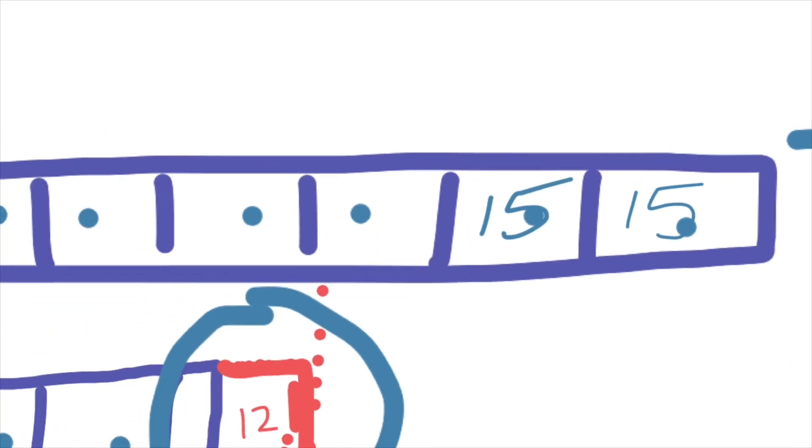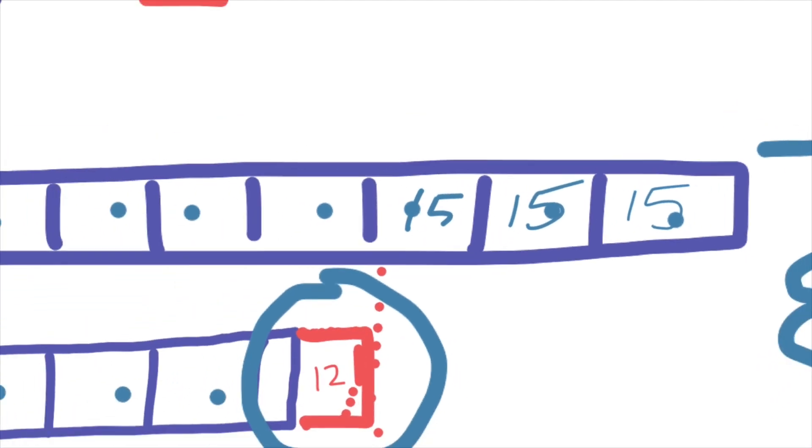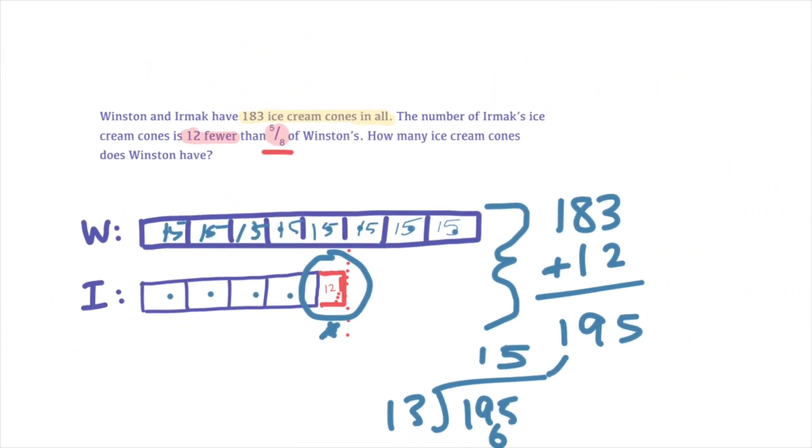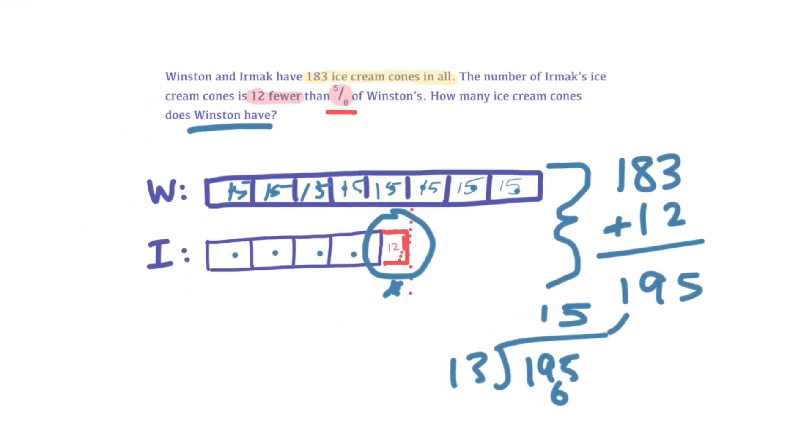This tells me something very important. Now I know every block is 15. There we go. We'll just ignore those dots there. Everything is 15. And I can actually ignore Ermacs because the question is not asking me anything about Ermac anymore.